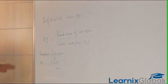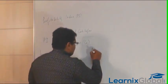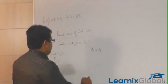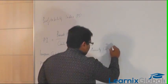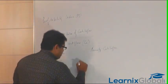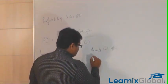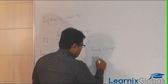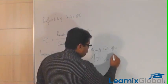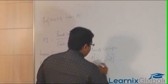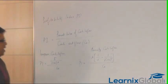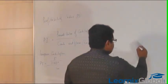If the cash flow is annuity — meaning the amount which flows every year is constant — then the formula will be: profitability index equals A multiplied by [1/i minus 1 divided by i into (1 + i) to the power n], divided by C.